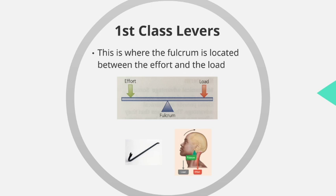Looking at first class levers first. This is where the fulcrum is located between the effort and the load — almost like a seesaw. The joint is located in the middle of the lever arm, with the effort provided by muscle contraction on one side, and the load on the opposite side. In everyday life, an example would be a crowbar: the pivot is the curved part resting on the ground, the load is the small end getting under a nail, and the effort is the longer end you push down with your hand.